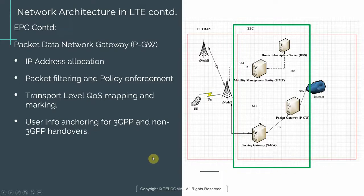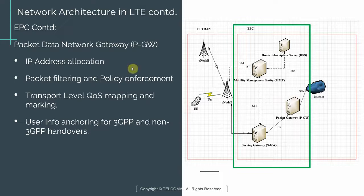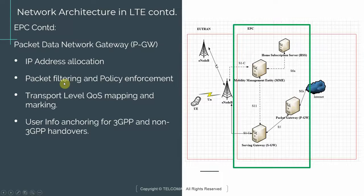Moving on — the last network element in the EPC is called the Packet Gateway, or PGW. It is responsible for IP address allocation; since LTE is an all-IP architecture, every user equipment needs an IP address, and that address is assigned by the PGW. It is also responsible for packet filtering and policy enforcement.